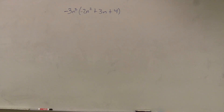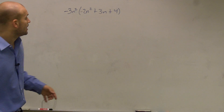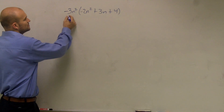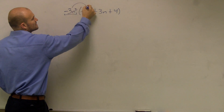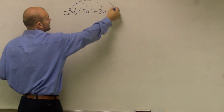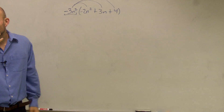To solve this problem — very similar to the problem we did before — remember we have to multiply our whole monomial times each of the three terms inside the parentheses.